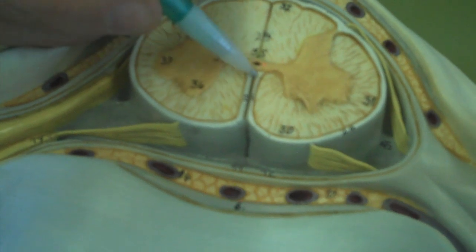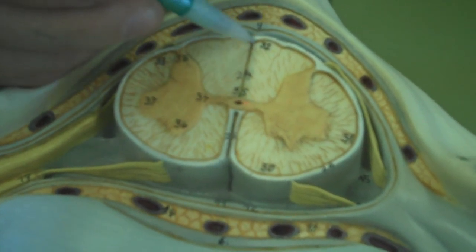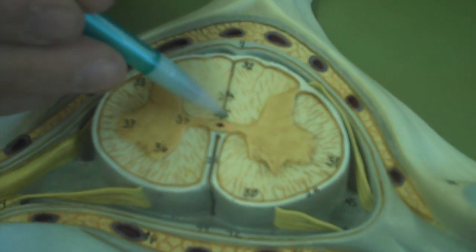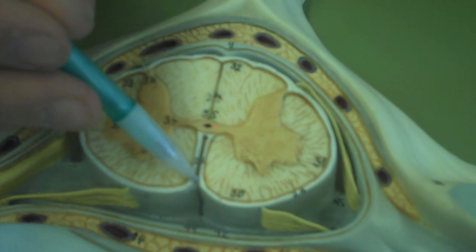You'll see these two divisions within the white matter here. This one on the back here is the posterior median sulcus, while the one on the front is the anterior median fissure.